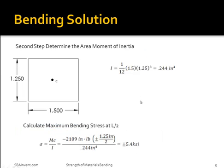The next part to solving this problem is determining what the area moment of inertia is. Since this is a simple rectangle, the area moment of inertia would be very easy to obtain. To determine the area moment of inertia, you would have 1/12 times base times height cubed, which would be 1/12 times 1.5 inches times 1.25 inches cubed, which would then equal 0.244 inches to the fourth.